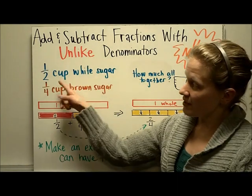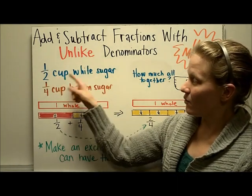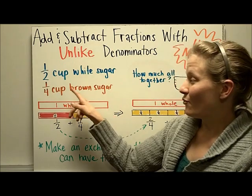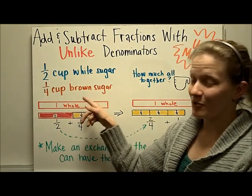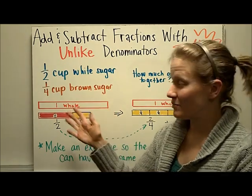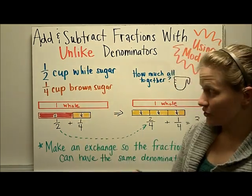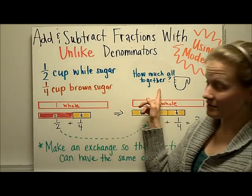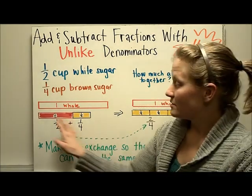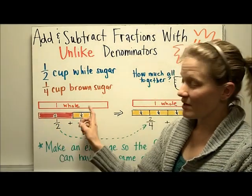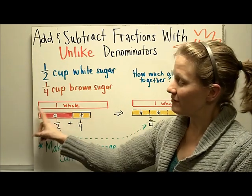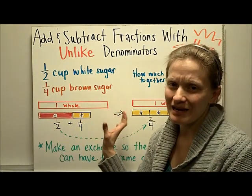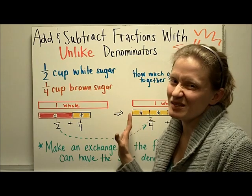Let's pretend that you needed one-half cup of white sugar and one-fourth cup of brown sugar for a recipe. You could use a model to figure out how much that was all together. In each of these models using fraction towers, I've displayed the one whole so that you can get an idea of what part of the whole it is.